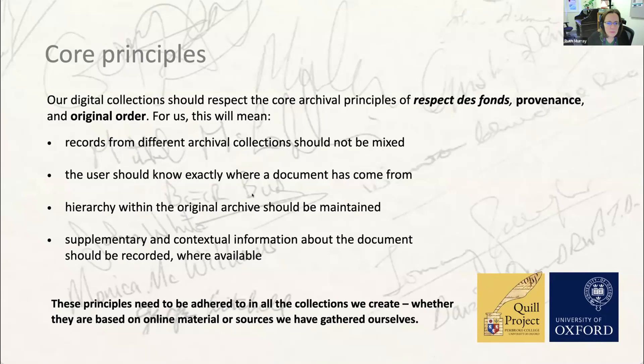So the first thing: ensure that records from different archival collections are not mixed and that all files from one archive are in the same collection. Secondly, we need to structure our collections so that the user knows exactly where a document has come from. If they want to see the original, they should know exactly where to go and what to call up from the archive. This means we have to think carefully about naming our boxes and recording information accurately in the metadata.